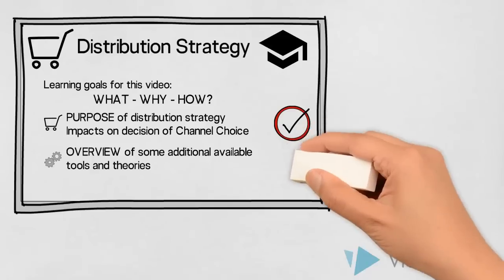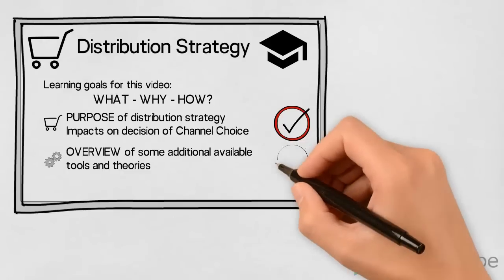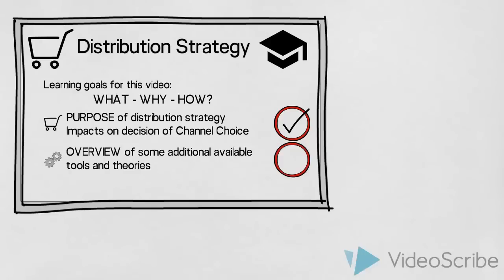We have now established an understanding of the purpose of distribution strategy, the different factors that impact our choice, and lastly we have presented an overview of some additional tools and theories available to us when determining a suitable place to distribute our product or service.